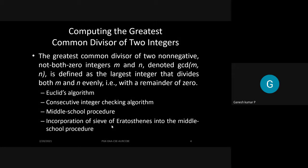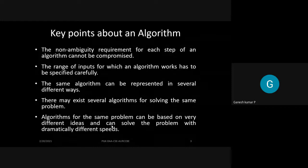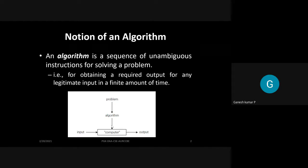Algorithms available for computing the GCD of two integers include: Euclid's algorithm, the consecutive integer checking algorithm, and the middle school procedure with incorporation of the Sieve of Eratosthenes. For the same problem there are many algorithms, and the criteria for choosing one include: non-ambiguity of steps, specified input range, and execution within a finite amount of time.